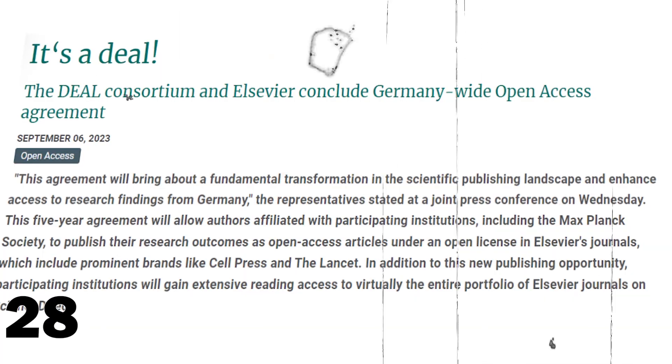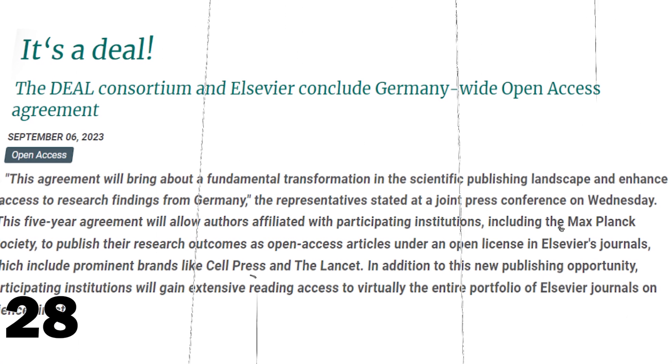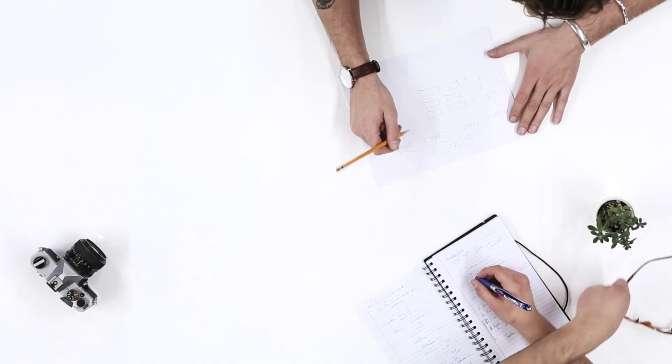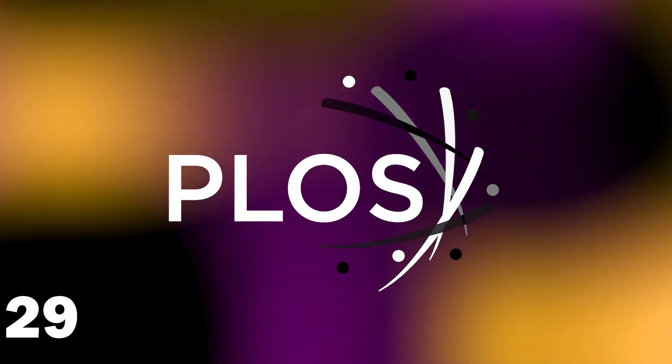And just some weeks ago, it was announced that also for the Max Planck Society, published research will be accessible for everyone to read. Individual groups of scientists have also launched their own journals, where their articles are freely accessible. The most successful so far is PLOS, which has seen remarkable growth over the last years.